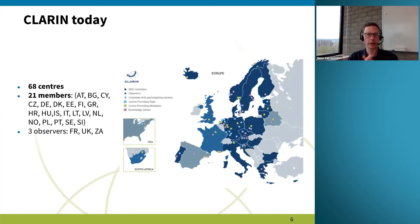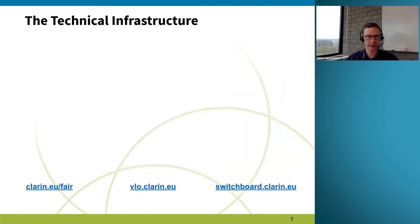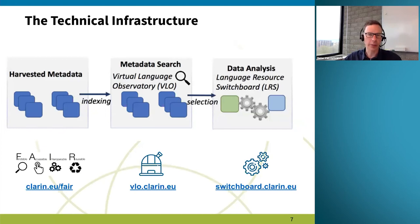Organizationally, CLARIN is a distributed infrastructure consisting of centers. At the moment we have 68 centers — most are situated in Europe, but we also have centers in the US at Carnegie Mellon University and in South Africa, where we have a full consortium. For a full overview of all members and consortia, please go to our website where you can find more information about your local CLARIN consortium.